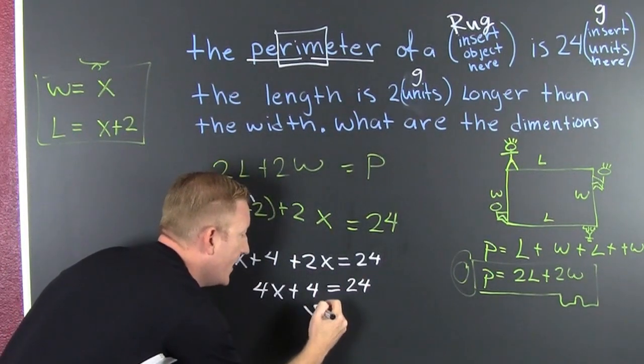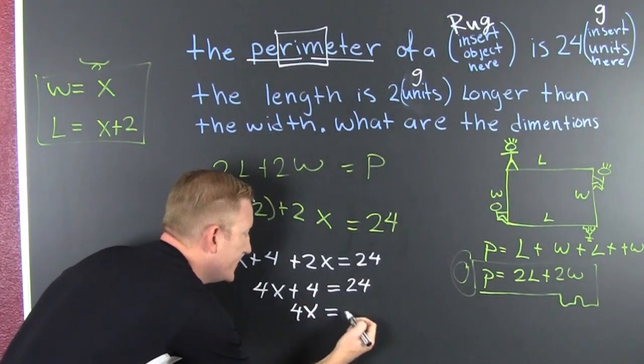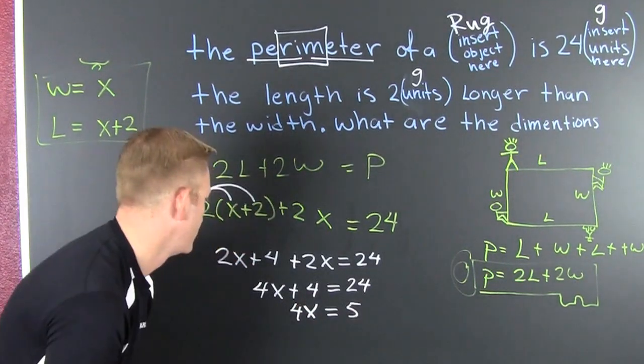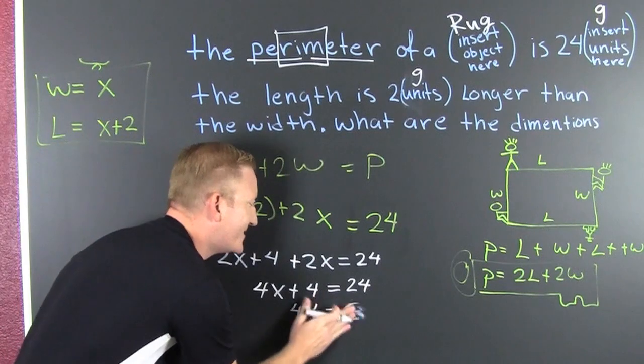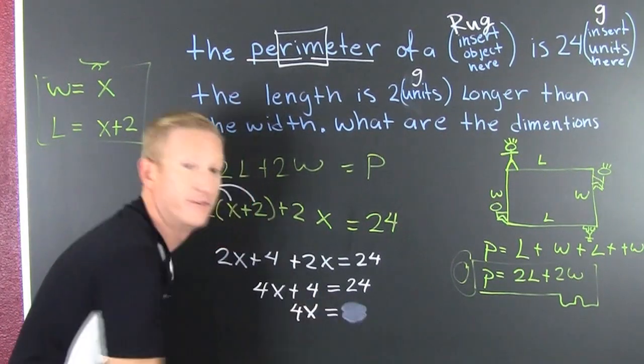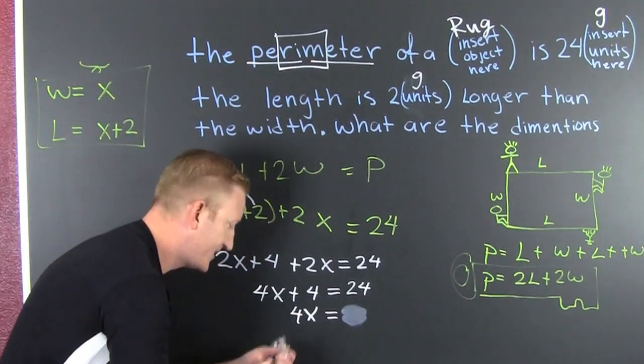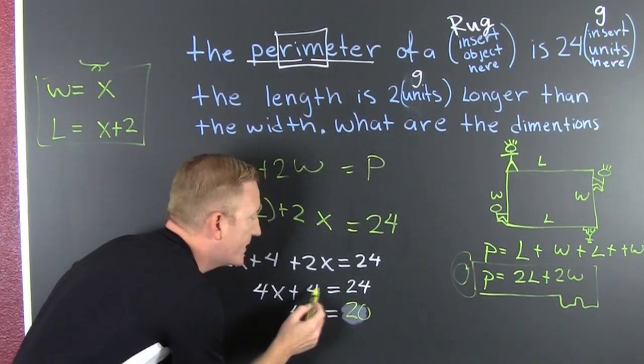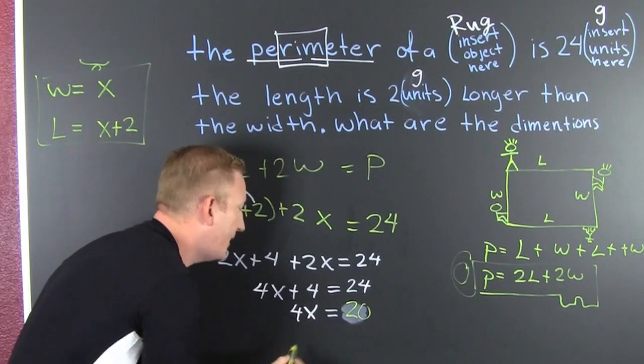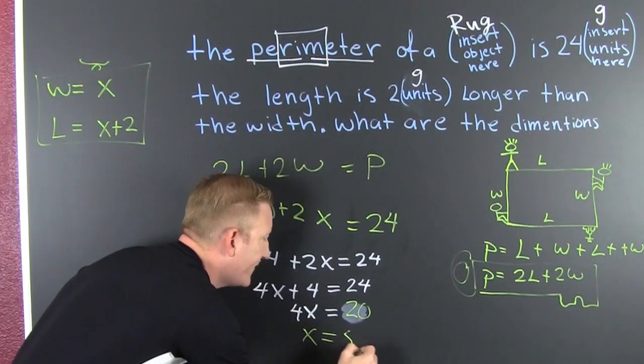Finish him. I subtract the 4 off each side. And 4x turns out to be 5? No! Whoops! Foreshadow. Good in literature, not in math. Alright. That should've been 20. Why? Because 24 minus 4 is 20. So then x turns out to be 5.